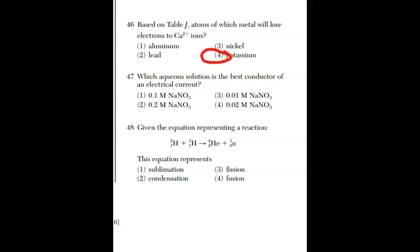If we go to 47, it says, which aqueous solution is the best conductor of an electrical current? Well, you got to have ions. The more ions you have, the better. Now, all four of these solutes are sodium nitrates, that doesn't matter. So all that's going to matter is the concentration. And look what's the highest choice 2.